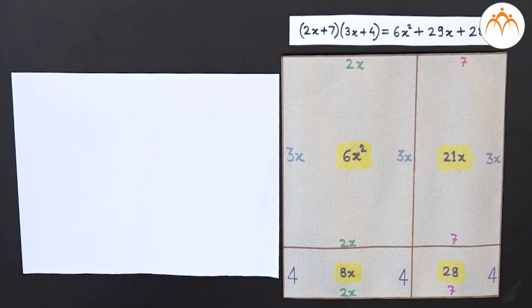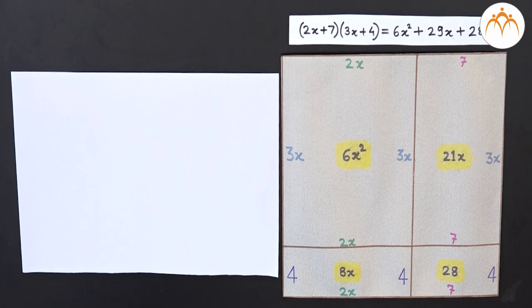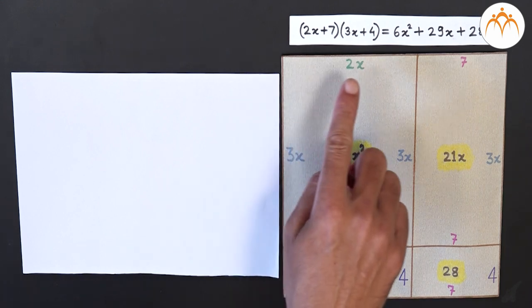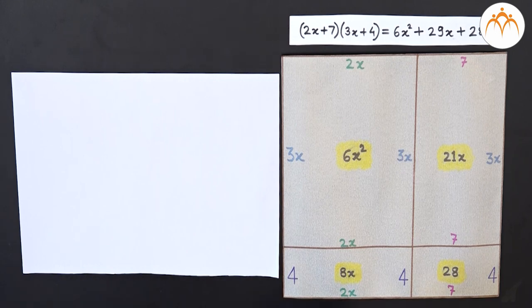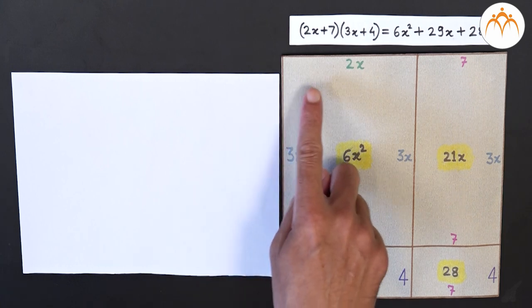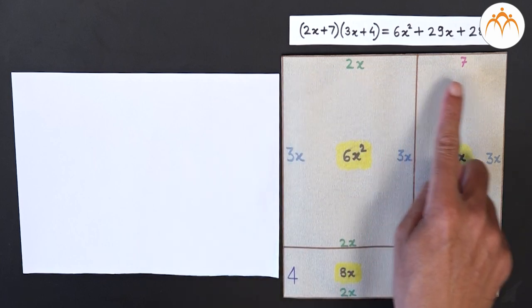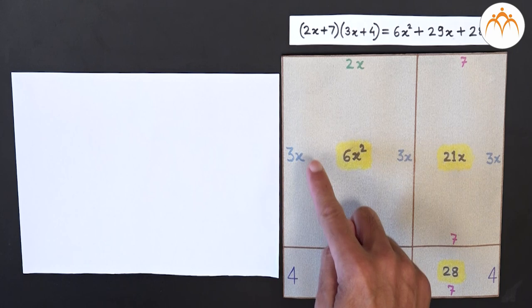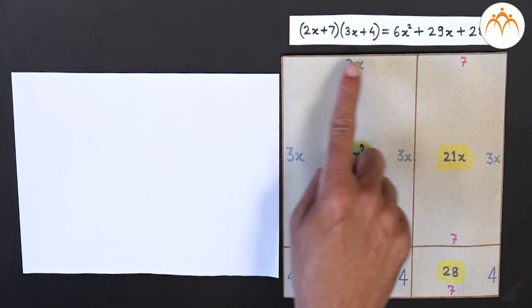Now let us try to expand (2x+7)(3x+4). Remember that here x represents some number — it is a variable. The expression (2x+7)(3x+4) is a multiplication, so it represents the area of a rectangle whose sides are of length 2x+7 and 3x+4. On a sheet of paper, let us draw a rectangle with one side equal to 2x+7, where this length is 2x and the remaining is 7, and the other side has length 3x+4. The area of the rectangle will be (2x+7)(3x+4).